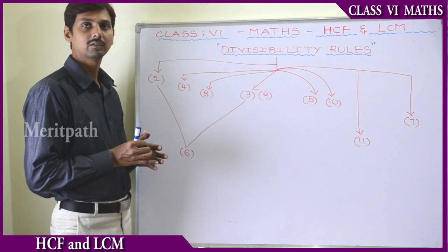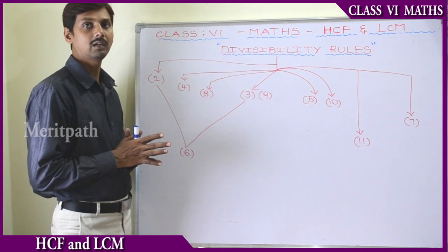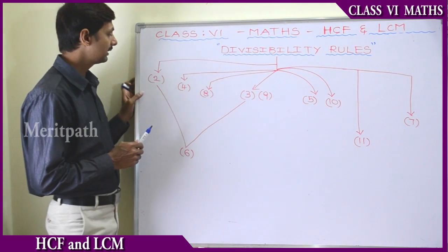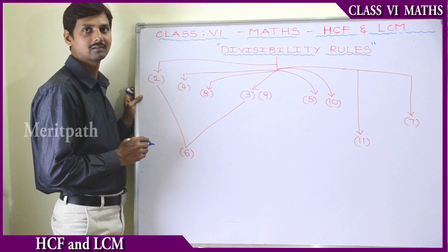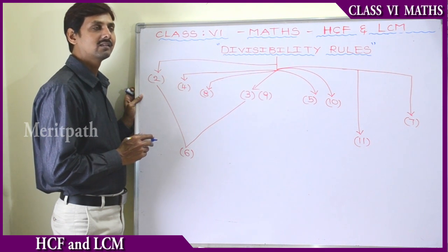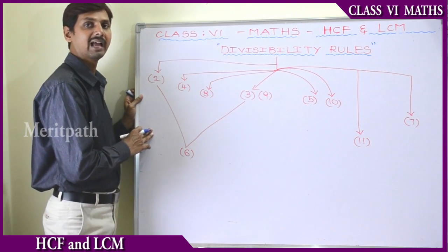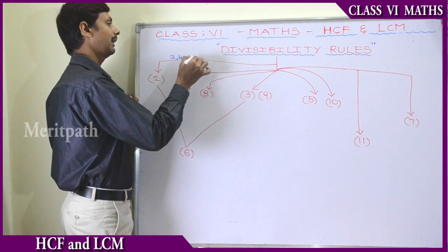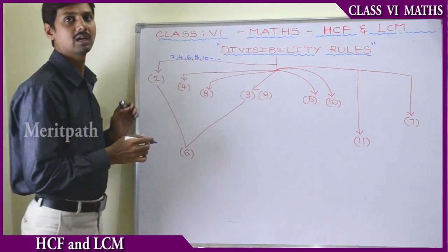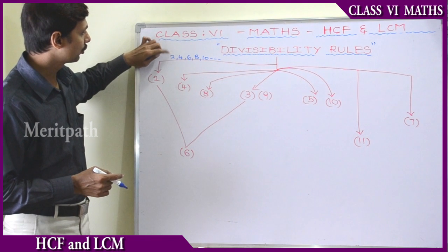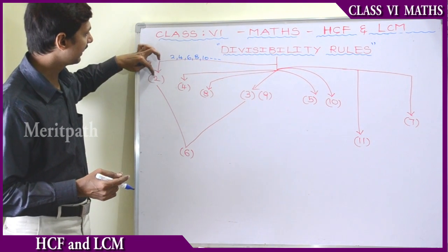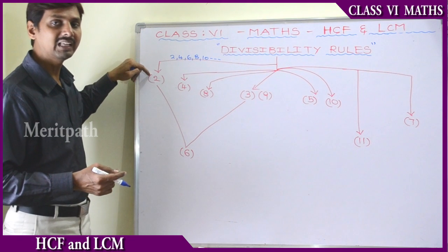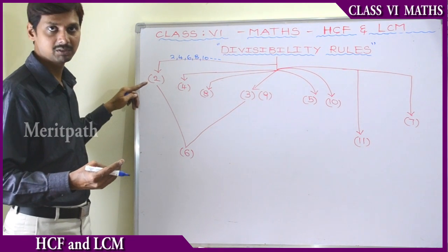Let's find out the divisibility rules for 2 to 11. So here we have taken all the numbers from 2 to 11. For divisibility by 2, all the even numbers are divisible by 2 — that is 2, 4, 6, 8, 10, and so on. All even numbers are completely divisible by 2: 2÷2=1, 4÷2=2, 6÷2=3, 8÷2=4, 10÷2=5.